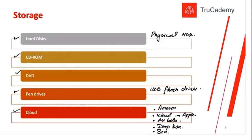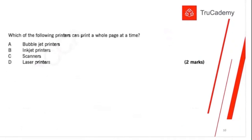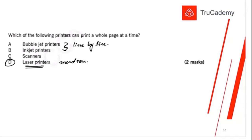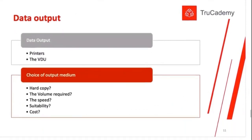Quiz question: which of the following printers can print a whole page at a time? Laser printers — they are the most sophisticated and modern printers. Bubble jet and inkjet printers print line by line or word by word; they cannot print a whole page at the same time. A scanner is not a printer.